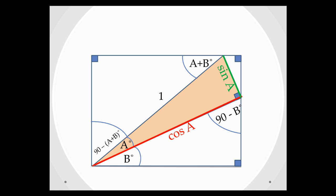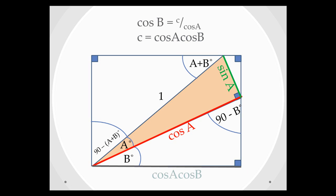If we now focus on this side down here and call it c, we can say that cos B is adjacent over hypotenuse, so c over cos A. Rearranging to find c, we find that c is cos A·cos B.